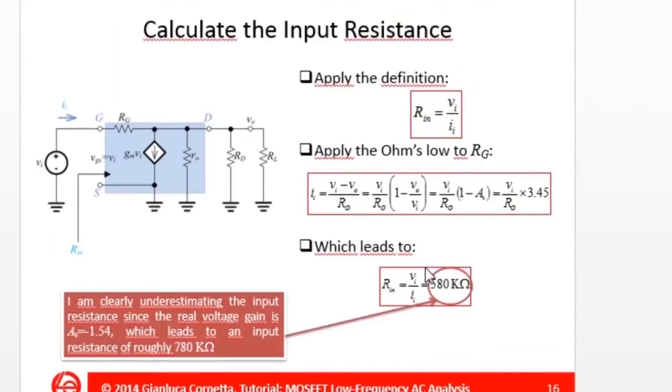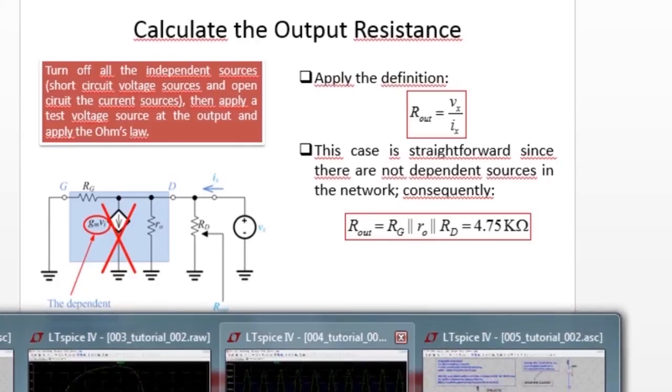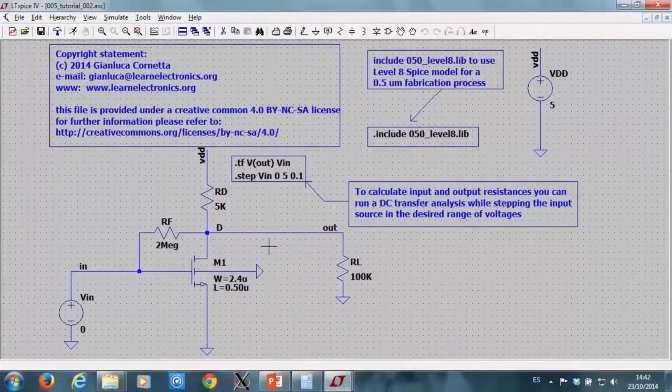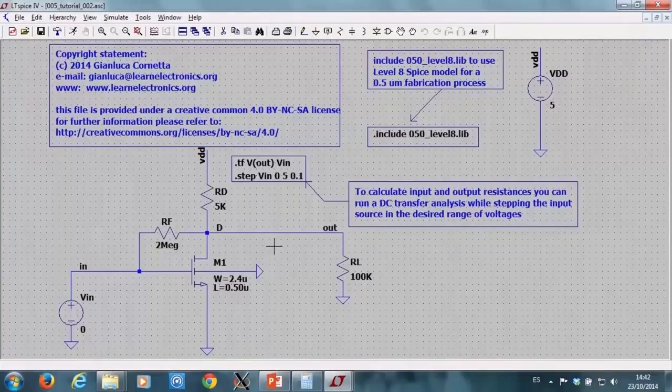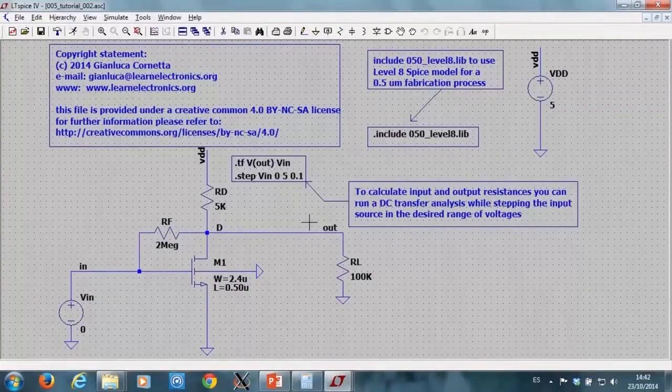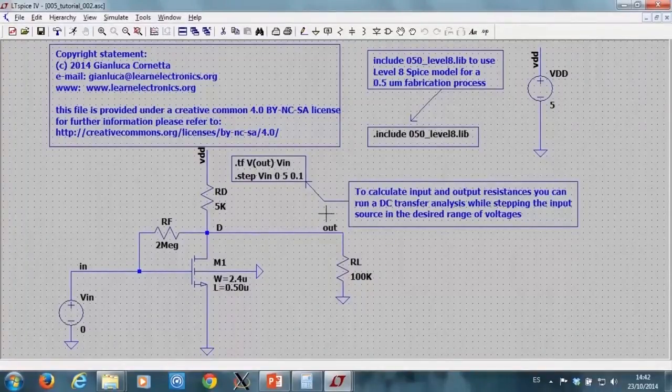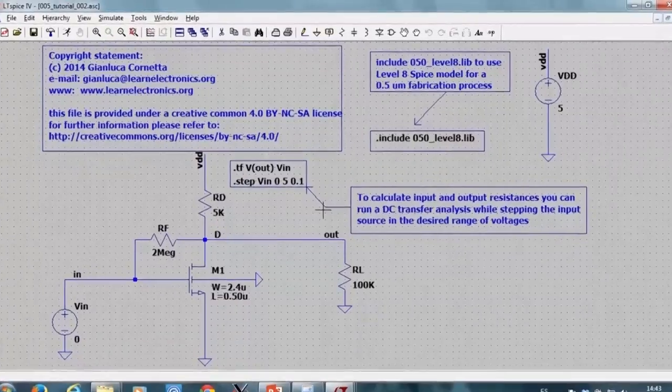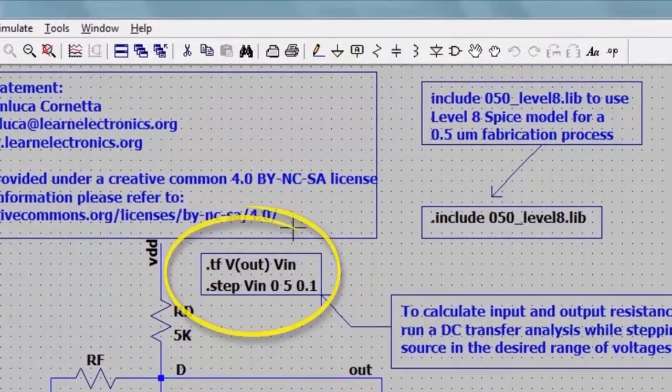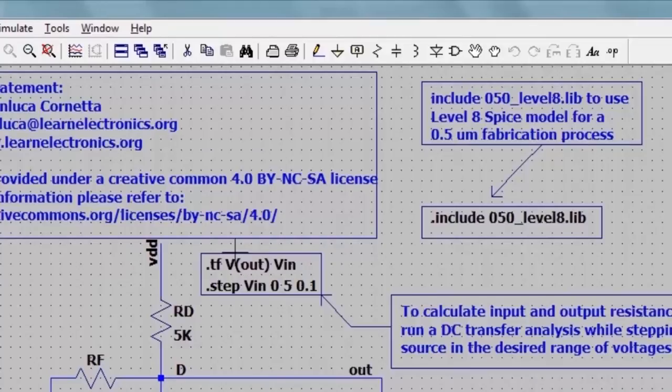The next step is to check by simulation that these estimations are correct. I come back to my schematic, and to calculate input and output resistances, I run a DC transfer analysis to compute the transfer function.